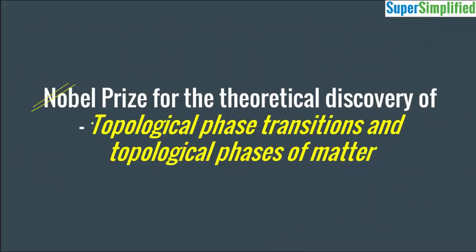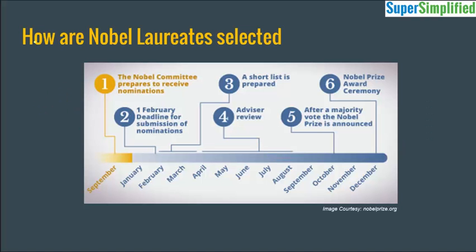Nobel Prize for theoretical discovery of topological phase transitions and topological phases of matter — I hope you understand this. Now there are people arguing that there was the discovery of gravitational waves recently, which was discovered at LIGO. So why has LIGO not received the Nobel Prize this year?